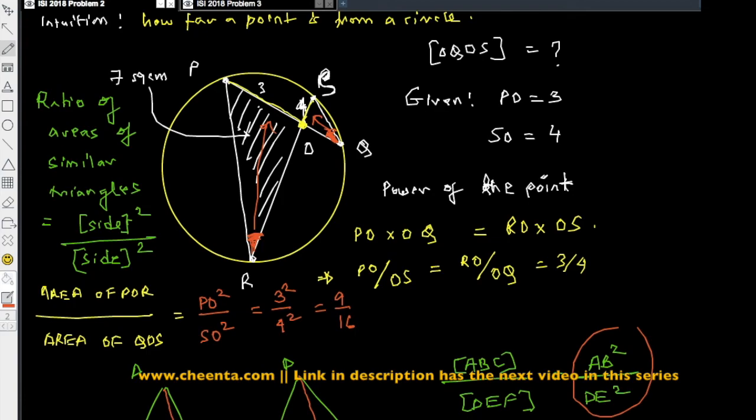And now, the problem becomes very easy. Because you already know the area of triangle POR, which is 7 square centimeter. So this implies 7 by QOS equal to 9 over 16. And you cross multiply to get the final answer.